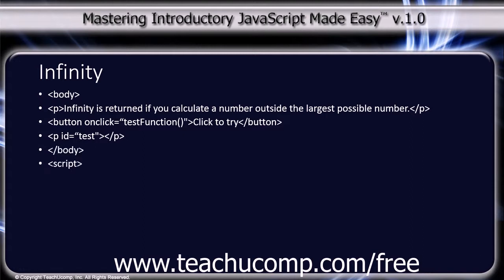Script tag. Function testFunction() with open curly bracket. var myNumber equals 2, semicolon. var txt equals empty string, semicolon.